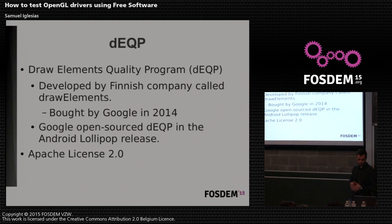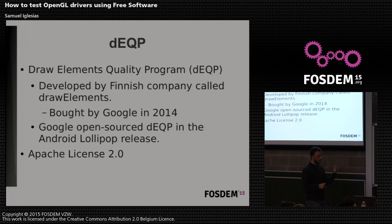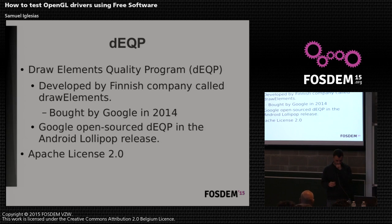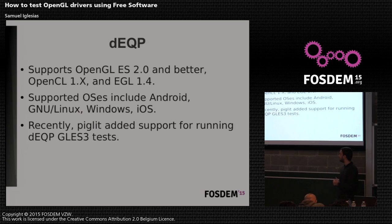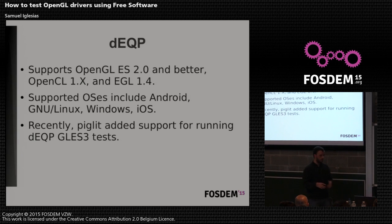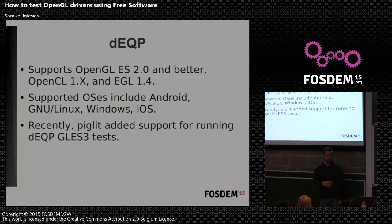In the case of the Draw Elements Quality Program, it was developed as a product of a Finnish company called Draw Elements. Last year this company was bought by Google, and Google open sourced it as part of the Android Lollipop release with an Apache License 2.0. This conformance suite supports OpenGL ES 2.0, 3.0, 3.1, OpenCL, and EGL. It supports operating systems including Android, GNU/Linux, and others. And recently, about two months ago, Piglit also added support for running the OpenGL ES 3.0 tests from the Draw Elements conformance suite.